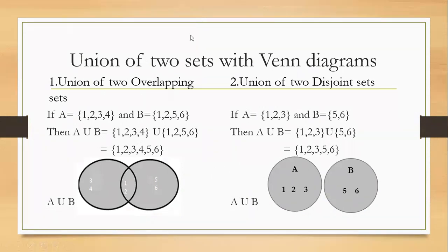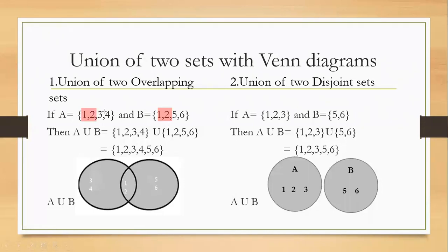Moving back to our topic: union of two overlapping sets. Here, A = {1, 2, 3, 4} and B = {1, 2, 5, 6}. These two sets are overlapping because some elements are common. We have to find the union of these two overlapping sets. Union means combining. The symbol used for union is the capital U.